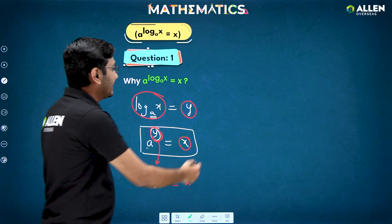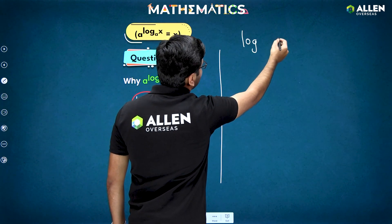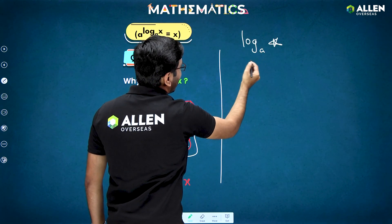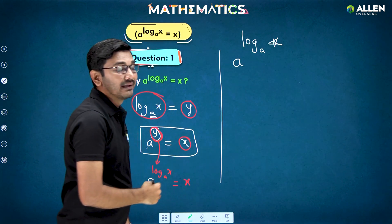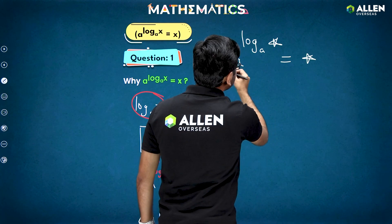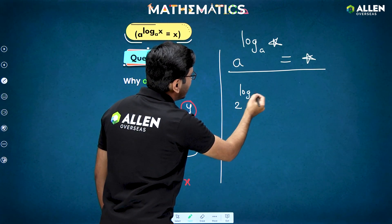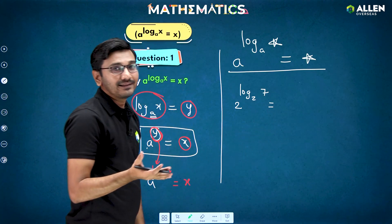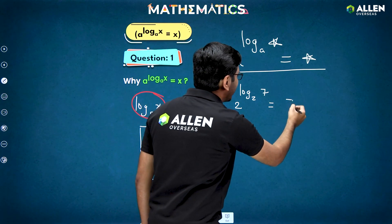So it means that whenever in future you come across log of something in the power and that has base a, and this whole term is in the power of some number again a, then the result should be just x. For example, if I ask you what is 2 raised to log of 7 to the base 2, then without any hesitation you should quickly tell the answer is 7.